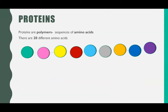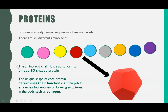What are proteins? Proteins are polymers. The monomers they're made up of are amino acids and they are joined together in a unique sequence. There are 20 different amino acids. You won't necessarily find all 20 in every single protein, but they form this chain of amino acids to make this polymer protein.